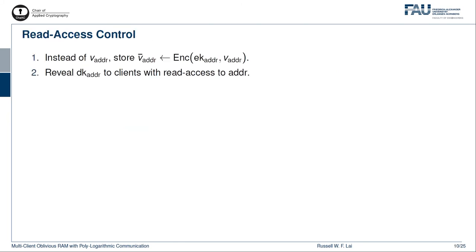Note that so far, the database consists of only plaintext values. To support read access control, instead of storing plaintext values v_address, the server stores an encrypted version of it, denoted by v̄_address, which is encrypted under an address-dependent key, denoted by EK_address. To grant read access to an address to a client, the data owner simply delegates the corresponding decryption key, DK_address, to the client.